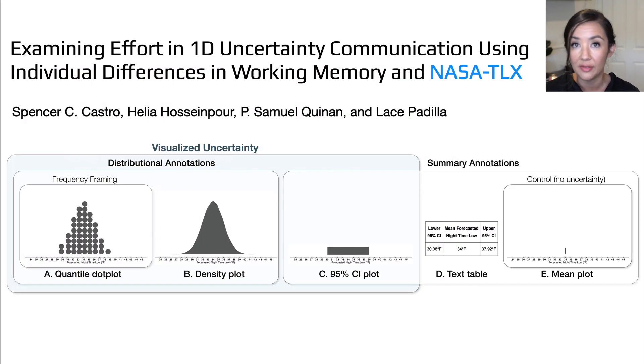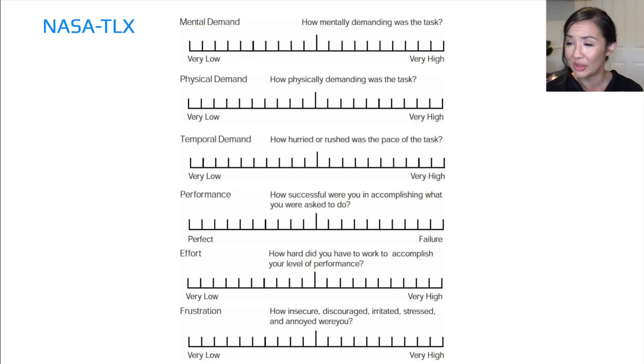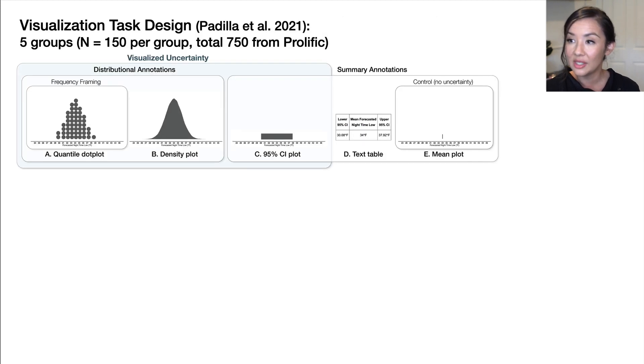The last way that we measured effort in this experiment is with the NASA TLX. It's very straightforward. It's just a survey that someone does at the end of an experiment where they rate how mentally, physically, temporally demanding the task that they just did was, how their performance was, effort, and frustration.